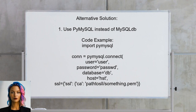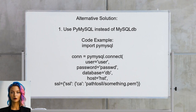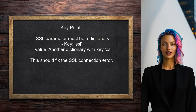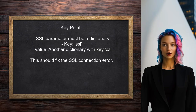An alternative solution from a user suggests using the PyMySQL library instead of MySQLDB. They recommend modifying the connection code to include SSL settings correctly. The key point is to ensure that the SSL parameter is a dictionary containing another dictionary with the key CA. This adjustment should resolve the connection issue on Windows.